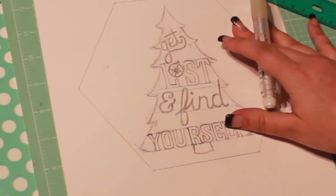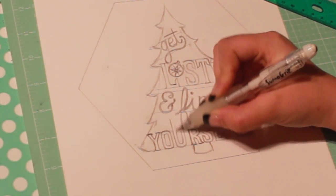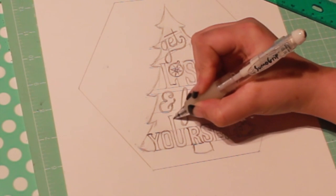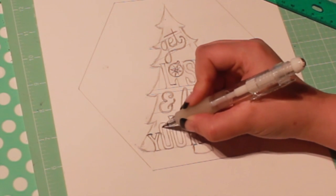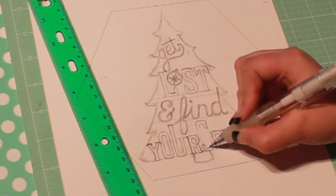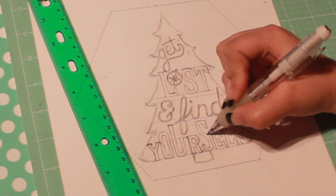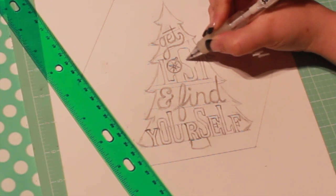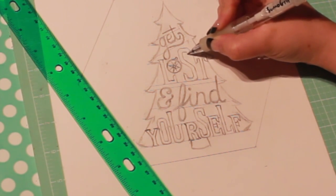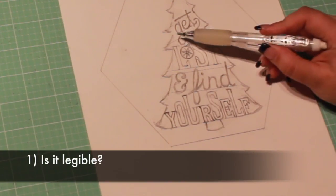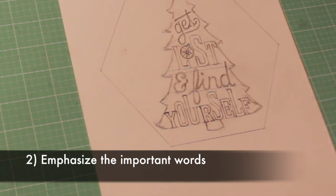I'm bothered by this white space, so I'm going to lengthen some of these letters to balance it out. Since I did that to the word yourself, I'm going to mirror it in the word lost. Now let's do a quick check of our four key elements. First, it's legible and reads clearly. Did I emphasize important words? I wanted the words get and and to take up the least amount of space, so I'm happy with that.